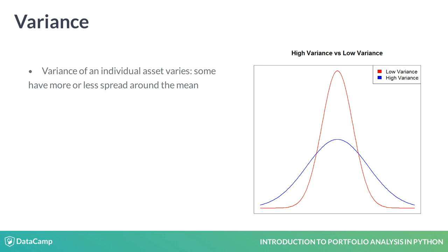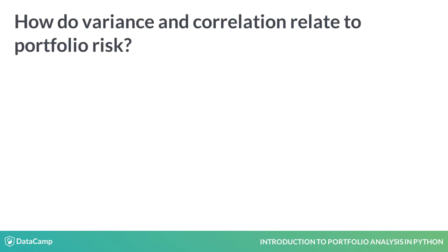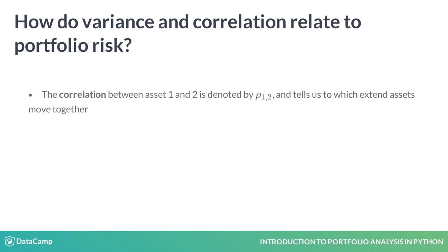This might be easy to understand for a single asset, but how does this work for a portfolio? Well, portfolio variance isn't simply the sum of all variances of the underlying stocks. Due to the correlation between the assets, it becomes more complicated. Since the assets in your portfolio correlate — i.e., move together or in the opposite direction — you intuitively understand that this will influence the riskiness of your investment. That implies that correlation should be an ingredient in your portfolio variance.